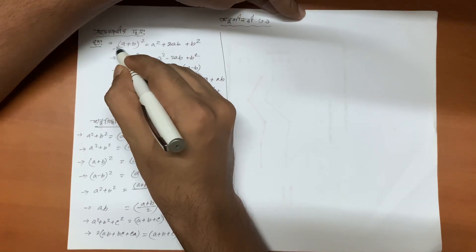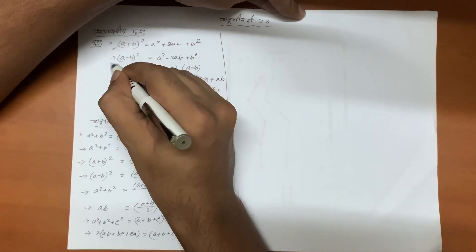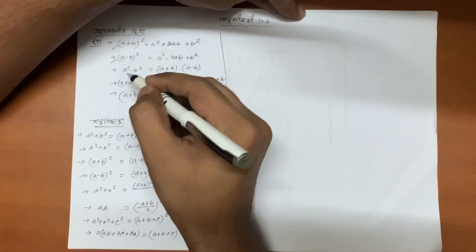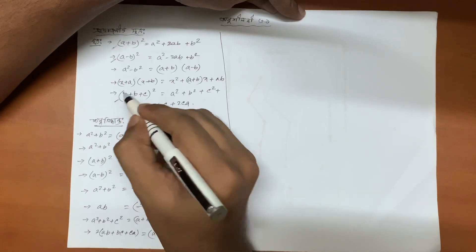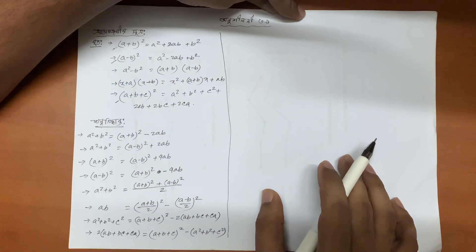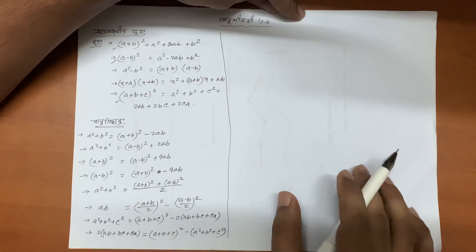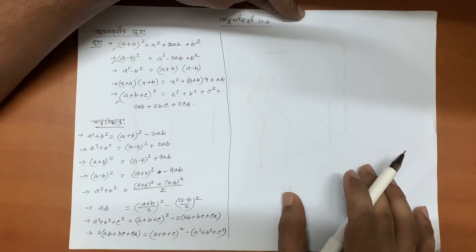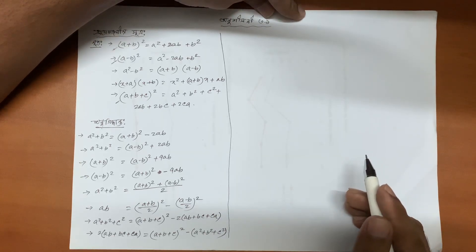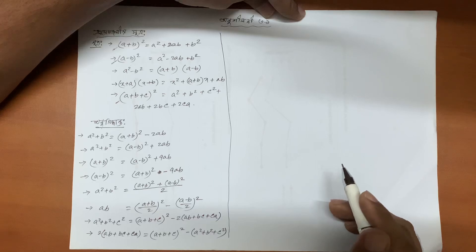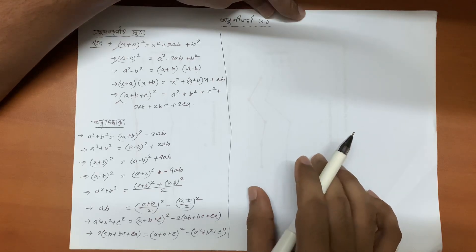The answer is a plus b whole square, a minus b whole square, a plus b plus c whole square. The answer would be any type — that's the answer, which is the answer.